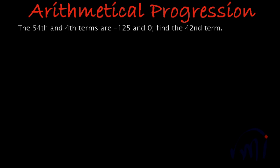Hi, so here we are taking one more solved example in Arithmetical Progression. This problem is slightly tricky. We are given that the 54th and 4th term are -125 and 0. We have to find the 42nd term.